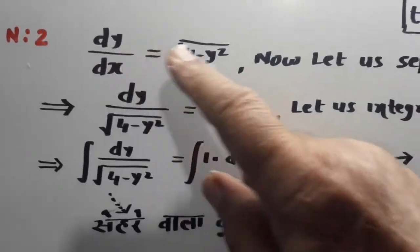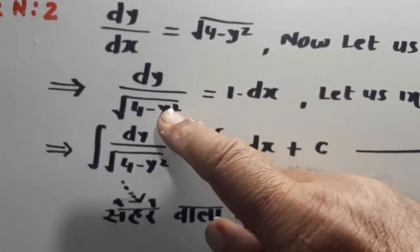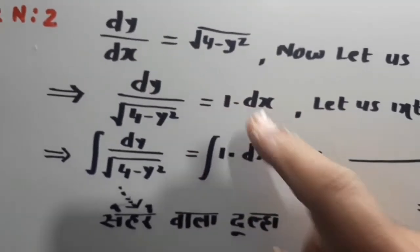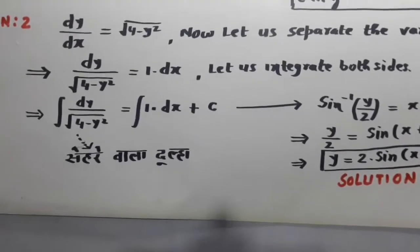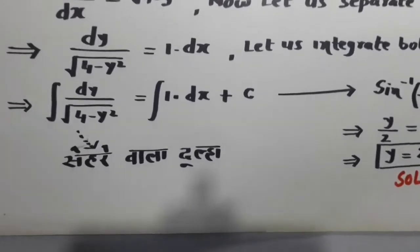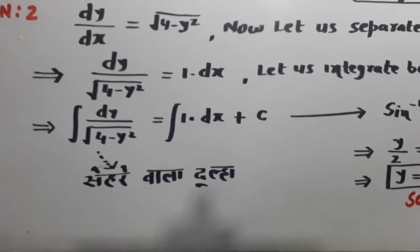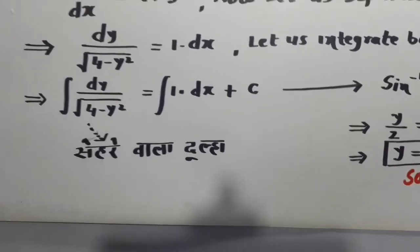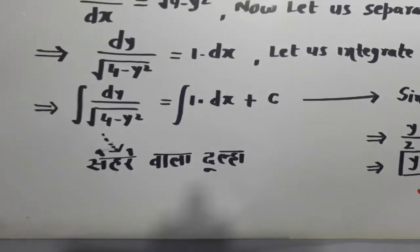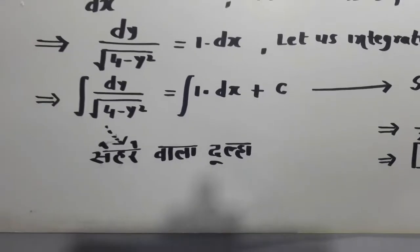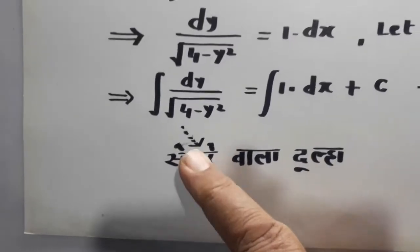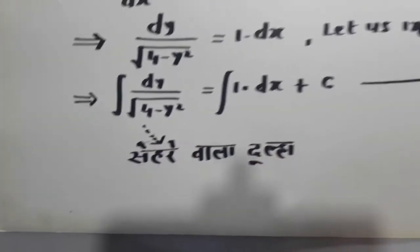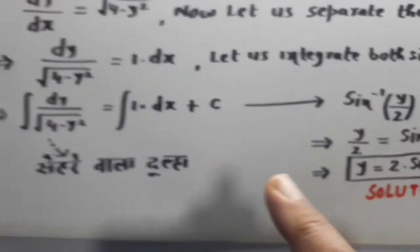Now, let us integrate both sides. Integration of dy/√(4-y²) is equal to integration of 1·dx. I have told you the integration tricks.